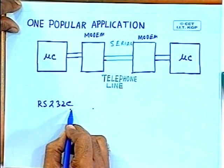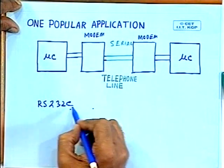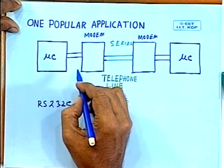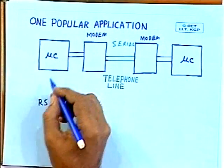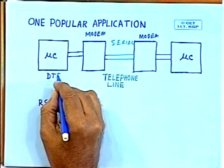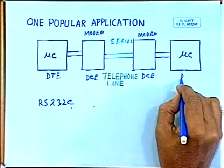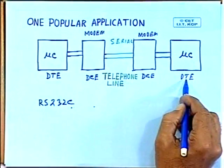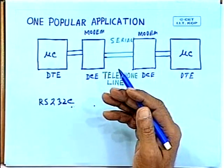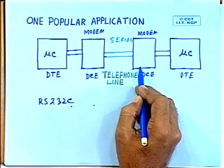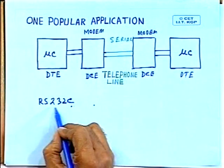RS-232C is a serial interface standard so that you can use a modem of any make — any modem can be interfaced through this standard. The computer or device is known as DTE (Data Terminal Equipment) and the modem is known as DCE (Data Communication Equipment). Two data terminal equipment are communicating through a serial link — it can be a telephone line, lease line, satellite link, or anything. The interface between the modem and microcomputer is RS-232C, so DTE and DCE interface is known as RS-232C.